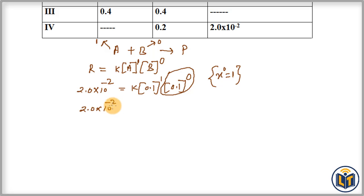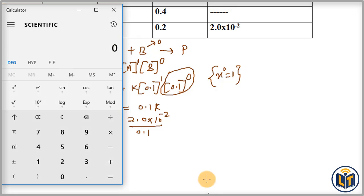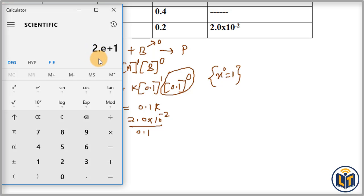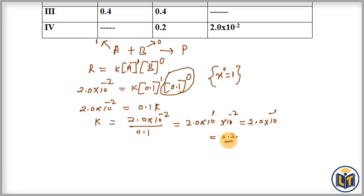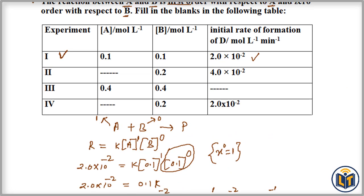Solving for K: 2.0 × 10⁻² = 0.1 × K. Transferring 0.1 to the left side gives K = 2.0 × 10⁻² / 0.1. Dividing: 2.0 / 0.1 = 20, which can be written as 2.0 × 10¹. Multiplying 2.0 × 10¹ × 10⁻² — adding exponents gives 10^(1−2) = 10⁻¹ — the rate constant K = 0.2.